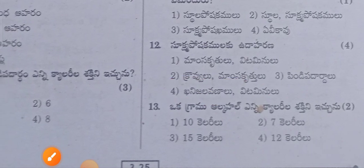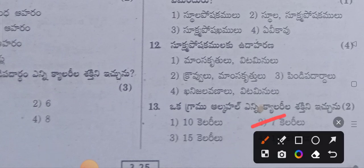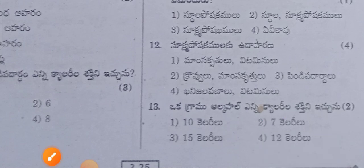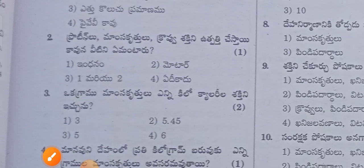1 gram of alcohol is — options are 10, 7, 15, or 12. You can get the right answer. Please like and share.